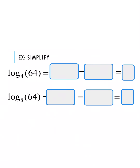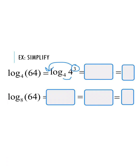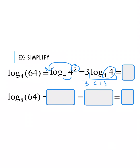Let's combine some properties to fully simplify an expression. We have log base 4 of 64. I notice that 64 can be rewritten as 4 to the third power — always look for interactions with the base. Now I have log base 4 of 4 to the third, so I move the exponent 3 to the front: 3 times log base 4 of 4. By property 4, log base 4 of 4 equals 1, so I have 3 times 1, giving a final answer of 3.